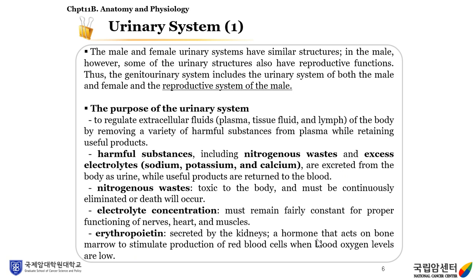Urinary system anatomy and physiology. The male and female urinary systems have similar structures. In the male, however, some urinary structures also have reproductive functions. The genitourinary system includes the urinary system of both male and female and the reproductive system of the male. The purpose of the urinary system is to regulate extracellular fluids, such as plasma, tissue fluid, and lymph, by removing harmful substances from plasma while retaining useful products.